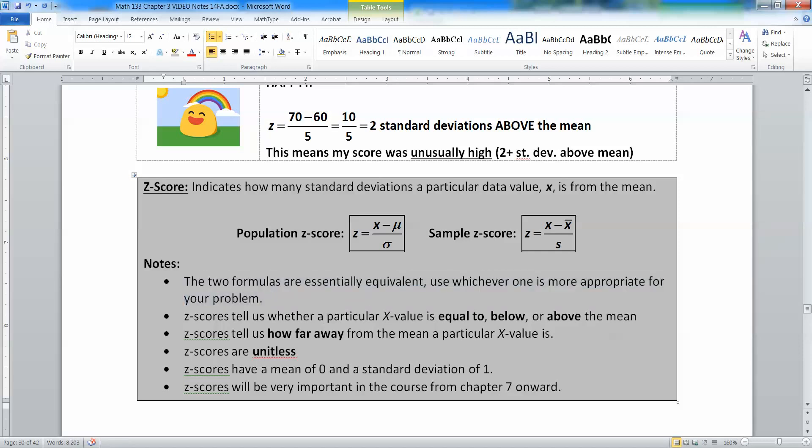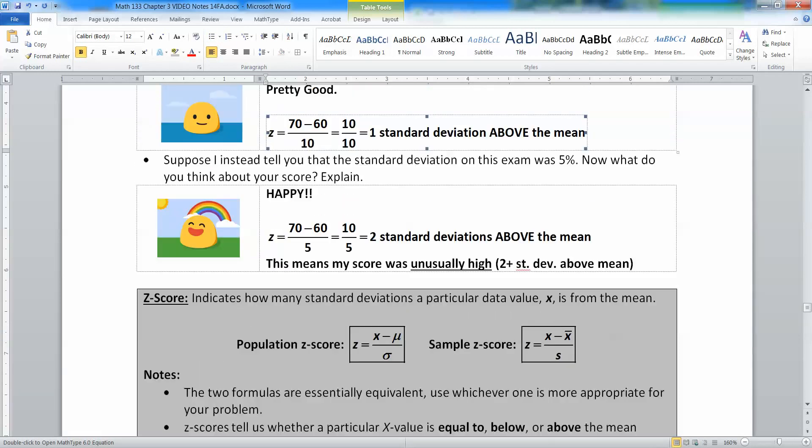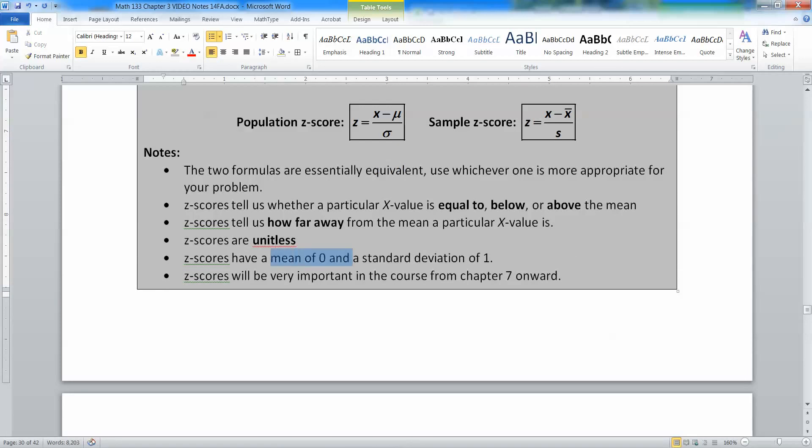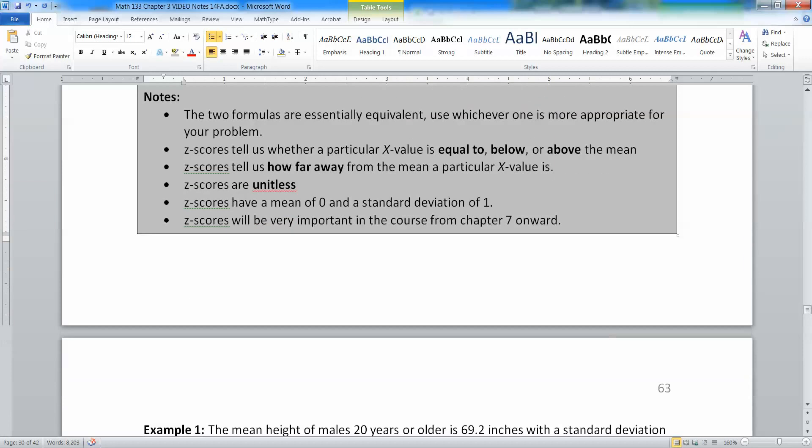Now, z-scores tell us how far a particular x value is equal to, below, or above the mean. If you're equal to the mean, your z-score will be 0. If you're above the mean, it'll be positive. If you're below, the mean will be negative. Z-scores tell us how far away from the mean a particular x value is. Z-scores don't have any units, so it wasn't like 2%, it was just 2. So I didn't say this was 1% or 1 degree or $1. It's just 1. They have a mean of 0 and a standard deviation of 1 because a person who scores the mean would have a z-score of 0. And then z-scores will be very important to us from chapter 7 onward. You work with z-scores a lot in those later chapters. So this idea is going to come back to haunt you.